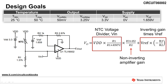The second term, R3 plus R2 divided by R2, represents the non-inverting gain of the amplifier circuit. Finally, the third term, VREF times negative R3 divided by R2, represents the reference voltage times the inverting gain of the amplifier.